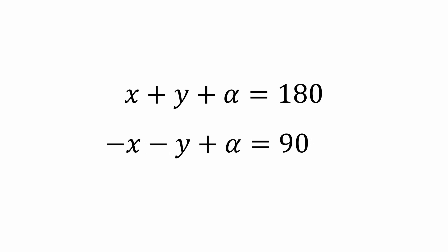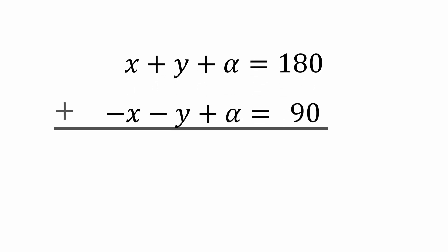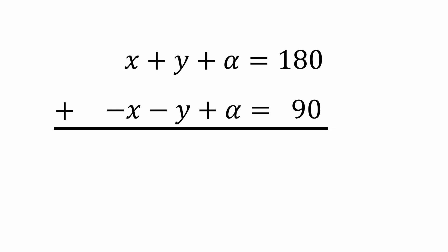Now let's add the two equations. We get 2 alpha equals 270. And just divide both sides by 2 to get alpha equals 135. And there's our answer.